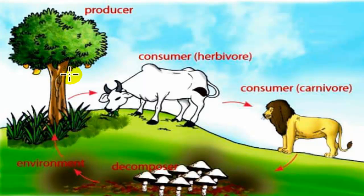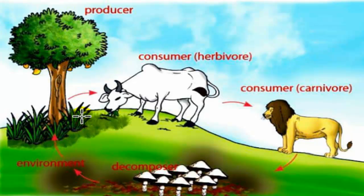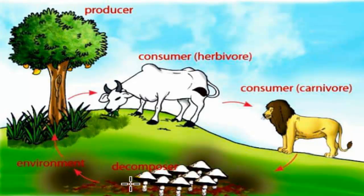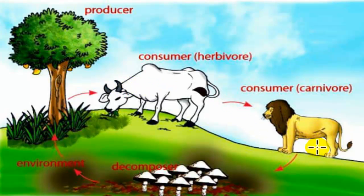Let's see this figure. This is a tree, which is a producer. This is a cow, which is a consumer and also a herbivore. This is a lion, a consumer which is a carnivore. This is a mushroom, which is a decomposer. The sun provides energy to plants, plants transfer energy to consumers, and when organisms die, decomposers break them down and return nutrients to the plants, continuing the cycle in nature.